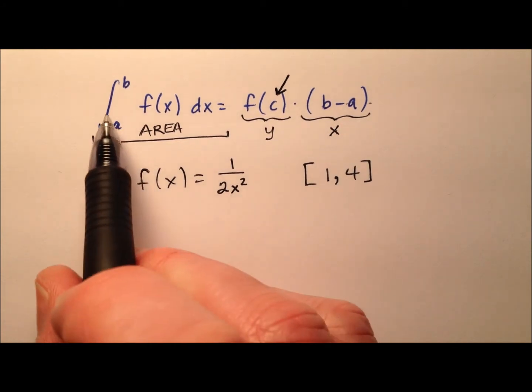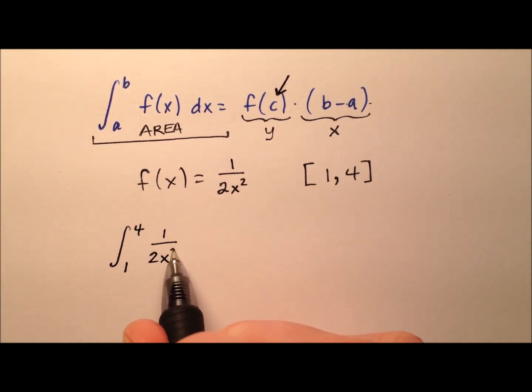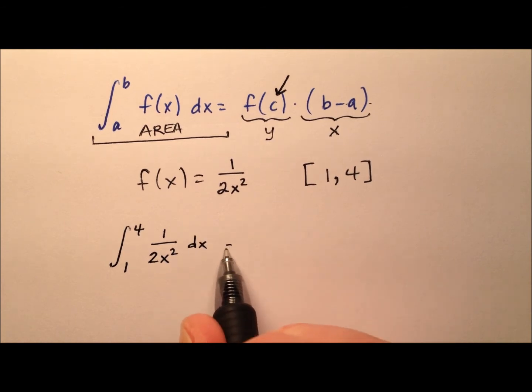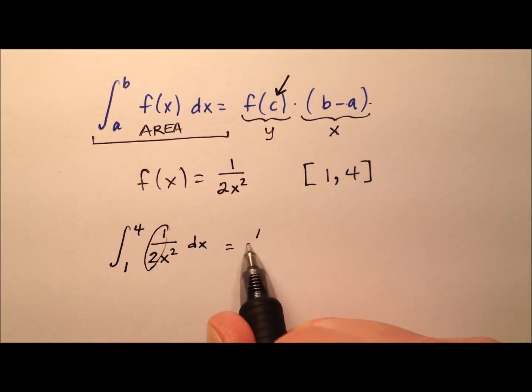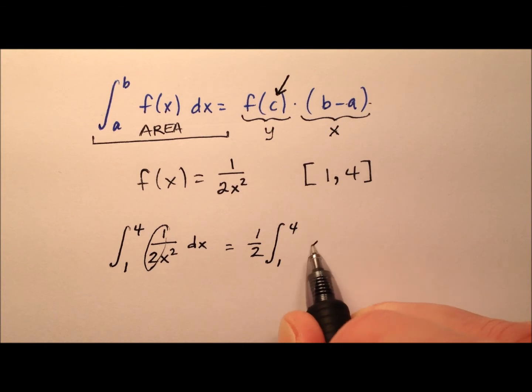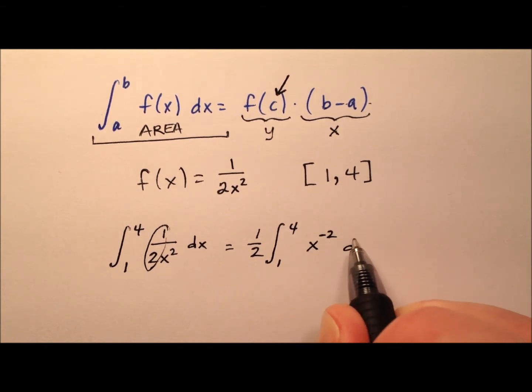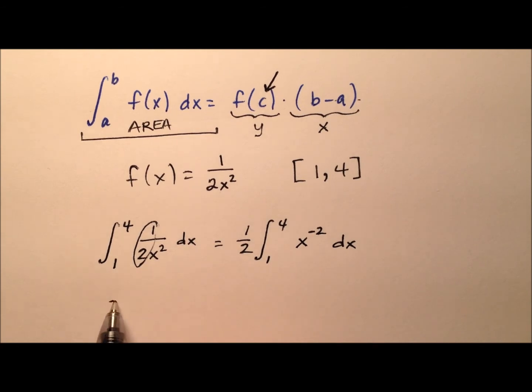So let's go ahead and start by actually working this definite integral from 1 to 4 of 1 over 2x squared with respect to x. I'm going to rewrite this, I'm going to bring this one half out front. And then I'm going to make this x squared, which is in the denominator, as an x to that negative two. So that's in the numerator now.